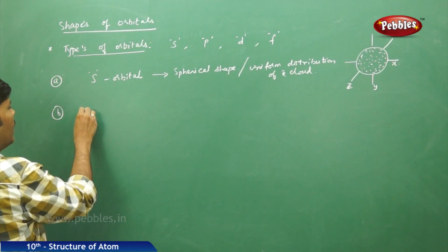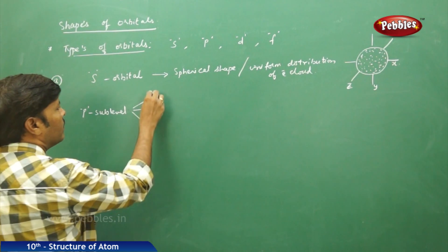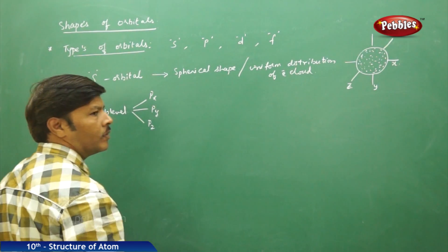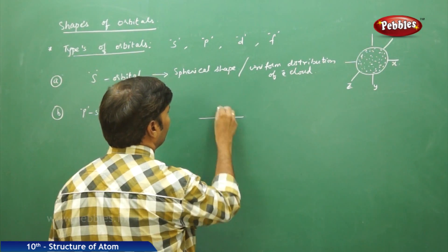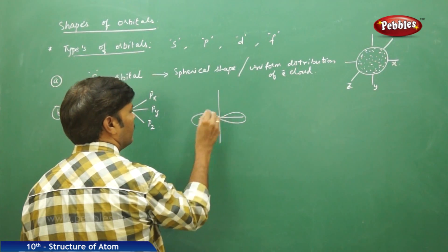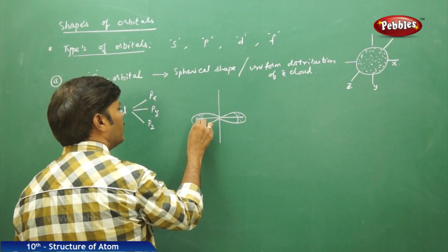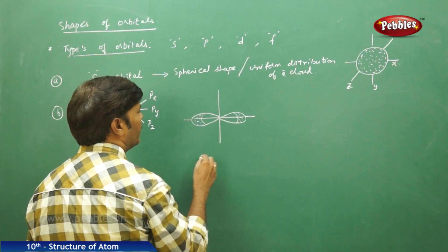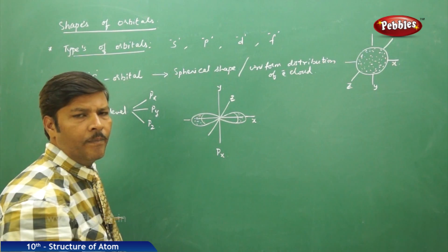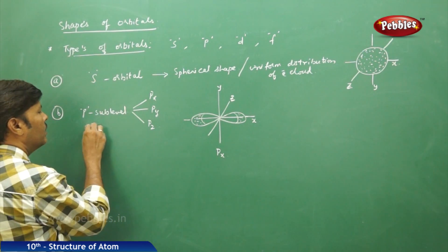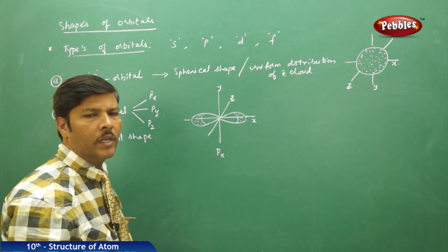Then, let us go for the p orbital. A p sub-level has three p orbitals: px, py, and pz. The shape of the p orbital is a dumbbell shape, made up of two lobes directing themselves along a particular axis.